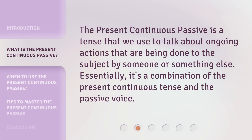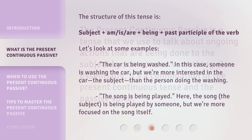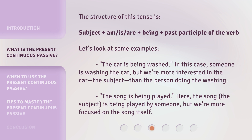The present continuous passive is a tense that we use to talk about ongoing actions that are being done to the subject by someone or something else. Essentially, it's a combination of the present continuous tense and the passive voice. The structure of this tense is: subject plus am, is, or are, plus being, plus the past participle of the verb.